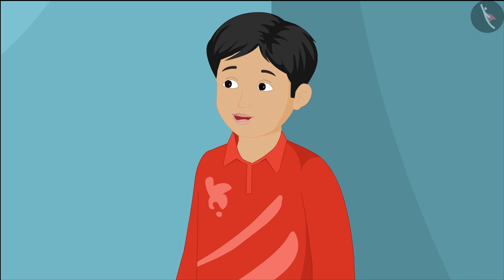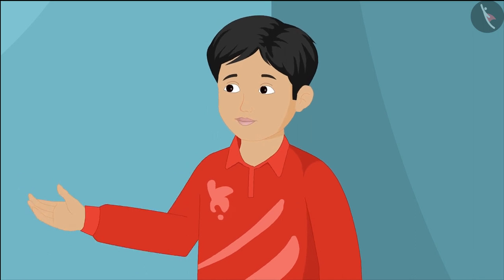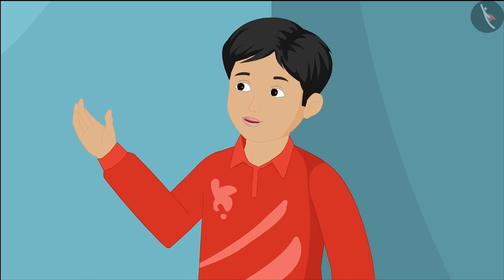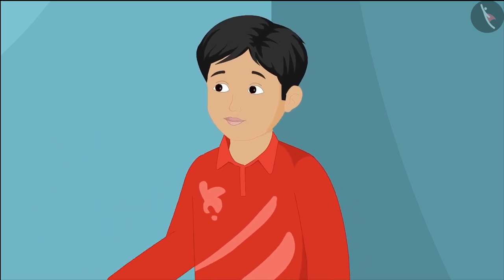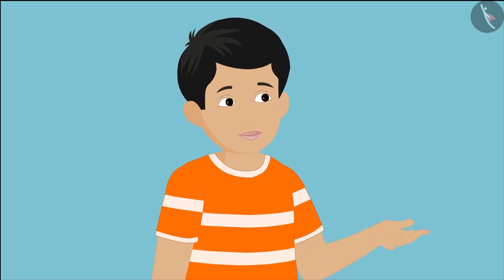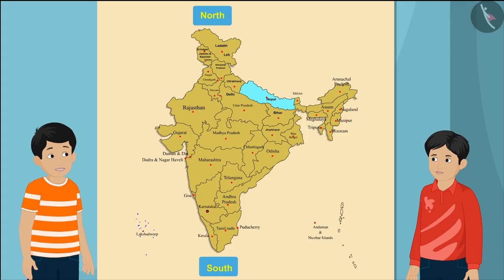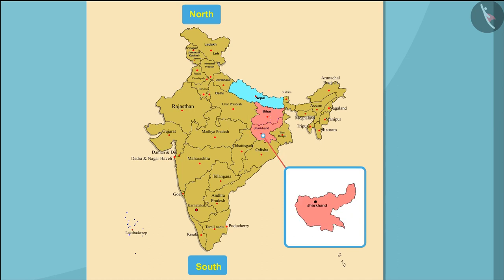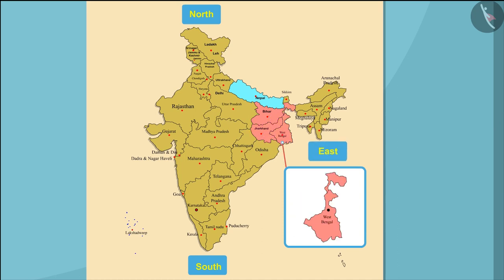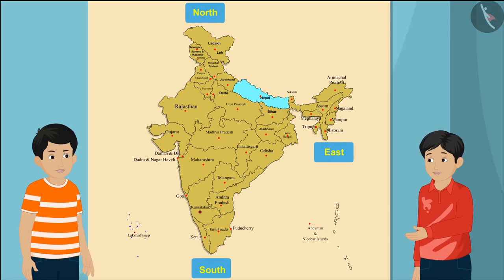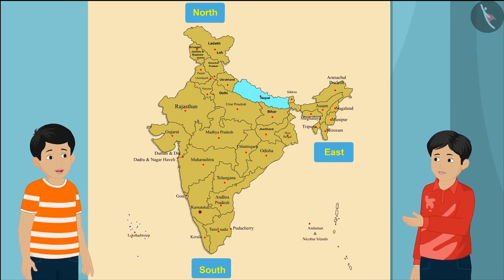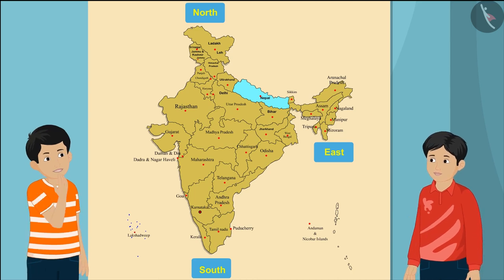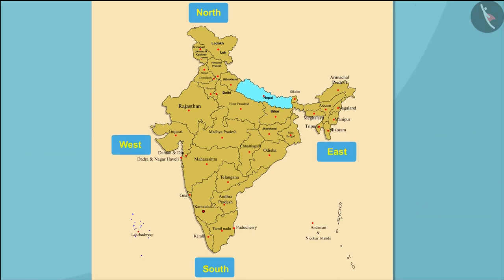Now can you tell me, by looking at the map of India, which states are in the east direction? Oh, that's very easy! By seeing the map, one can easily tell that Bihar, Jharkhand, and West Bengal are in the east direction. Excellent, Raju — now you are reading the map correctly!